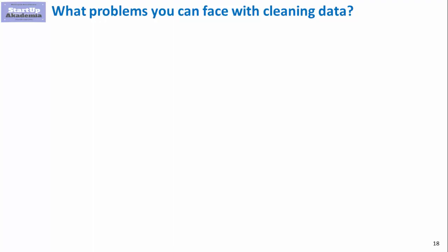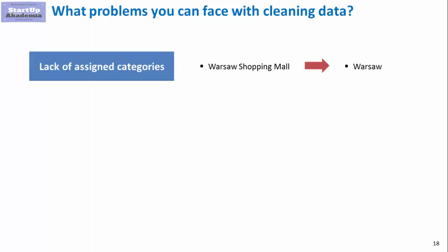We'll start with some examples of things we'll be dealing with. First, sometimes you can have a data point without an assigned category and you'll have to create that assignment based on the data. A good example would be having the name of a store but not having the city assigned to it — in this case you take the store name and derive the city from it.